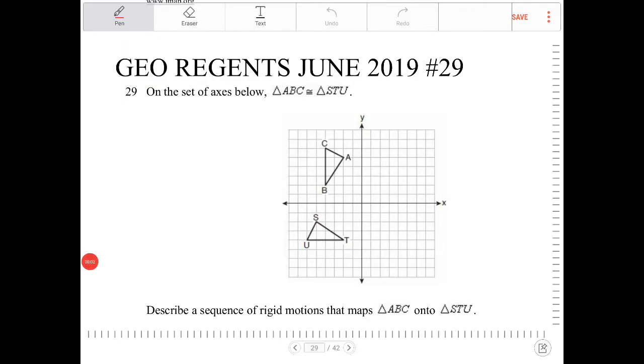On the set of axes below, triangle ABC is congruent to triangle STU. Describe a sequence of rigid motions that maps triangle ABC onto STU.